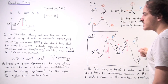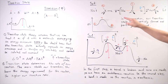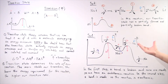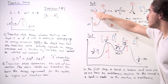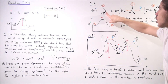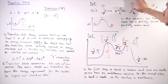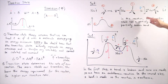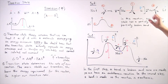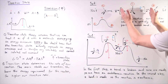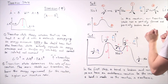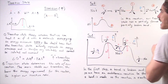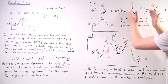The transition state is the highest point on the energy curve. In the SN2 reaction, the transition state has a partially formed bond between the nucleophile and the carbon, and a partially broken bond between the carbon and the leaving group. The leaving group becomes partially negative, the carbon is sp2 hybridized, and the nucleophile becomes partially positive. This transition state cannot be isolated — it is an energy maximum and will not exist for a very long time.